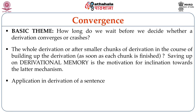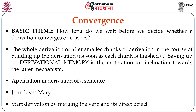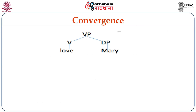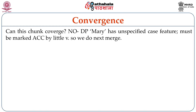Consider the application in the derivation of the sentence 'John loves Mary.' We start the derivation by merging the verb and its direct object. You see the structure in 2 on your screen, where DP Mary gets merged with big V head to give us this VP. Now, can this chunk converge? The answer is no, because the DP Mary has an unspecified case feature which must be marked accusative case by little v. So there is an unspecified case feature in it which stops it from converging.